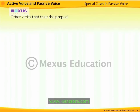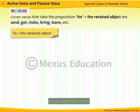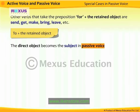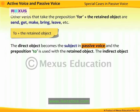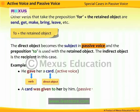Other verbs that take 'for + retained object' include send, get, make, bring, leave, etc. For 'to + retained object,' the direct object becomes the subject in passive voice and the preposition 'to' is used with the retained object — the indirect object is the recipient. For example, 'He gave her a card' becomes 'A card was given to her by him.' The direct object 'card' becomes the subject and 'to' is used with the retained object 'her.'